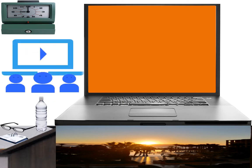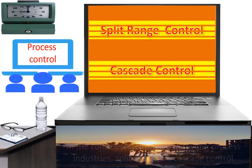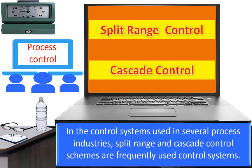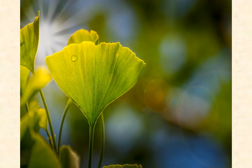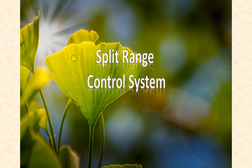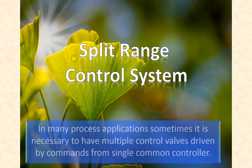In the control systems used in several process industries, Split Range and Cascade Control Schemes are frequently used control systems. We will discuss these control systems one by one. First, Split Range Control System.